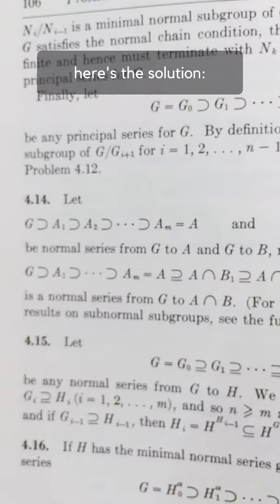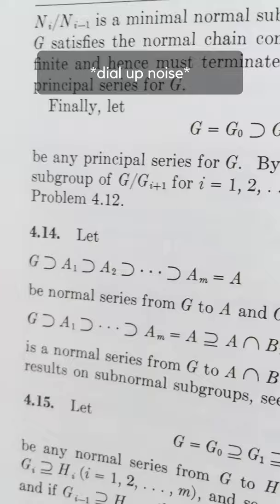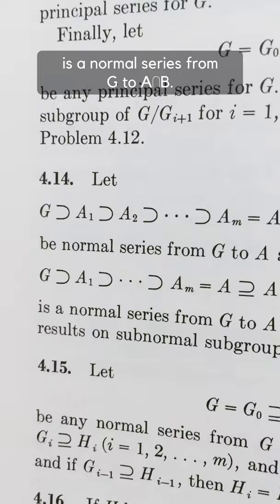Let [variables] be normal series from G to A and G to B respectively, then [result] is a normal series from G to A intersect B.